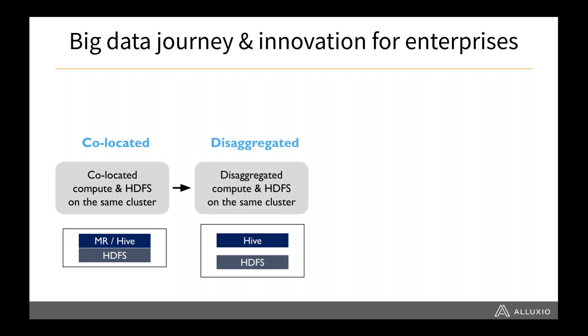Later on, people realized having compute and storage deeply coupled may not be the best solution, especially when you have different dimensions and different rates to grow your compute and your storage. In a deeply coupled way, you have to buy both storage and compute to scale your cluster horizontally. But from time to time, you may have just more data to grow every year, or just more compute-intensive workloads — so you probably want a disaggregated architecture with separate storage from compute.